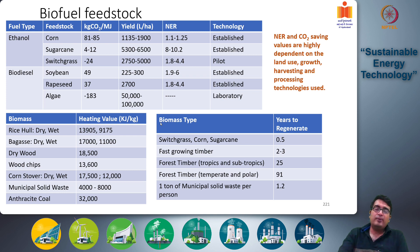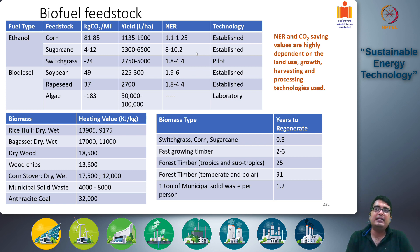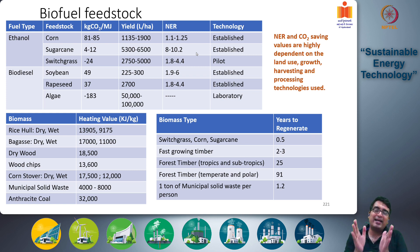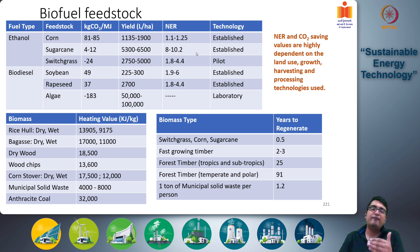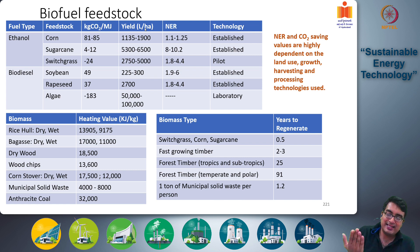A note of caution: if you consult different reports, you will find very different estimates for net energy ratios, CO2 emissions, and yields, because these values depend heavily on how land is used, how crops or algae are grown, where they are harvested, and where they are processed. It is a very site-specific, process-specific, and technology-specific outcome. Different papers often reach different conclusions regarding these values, so you need to be sensitive to those aspects.